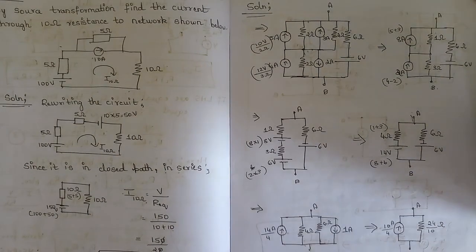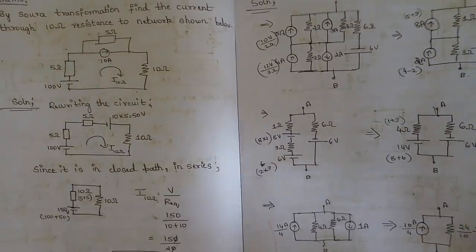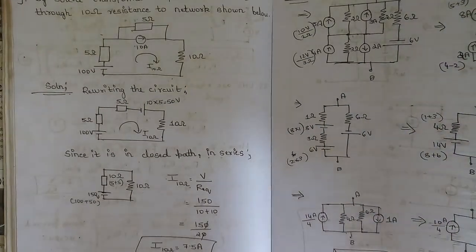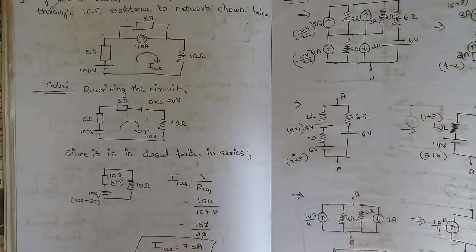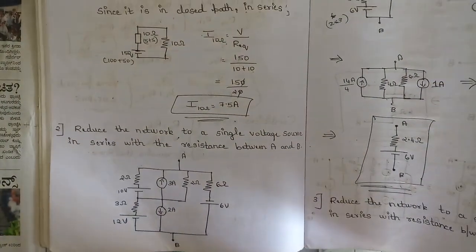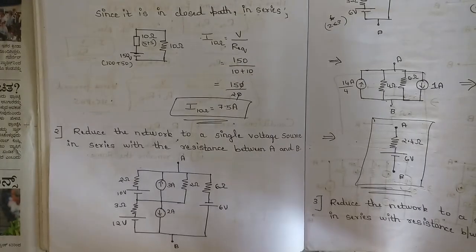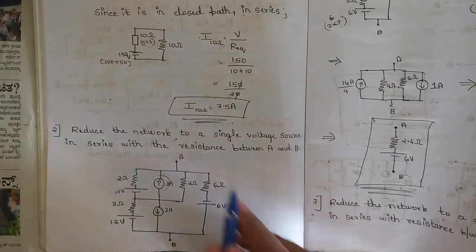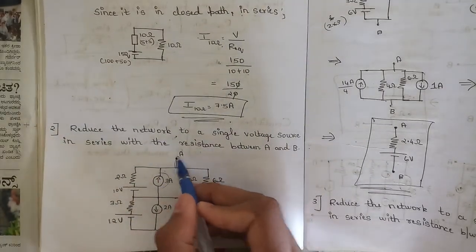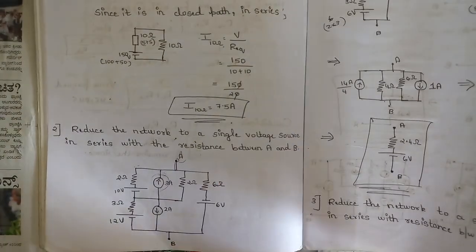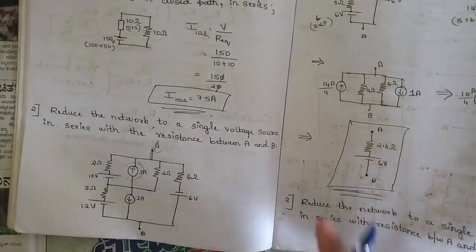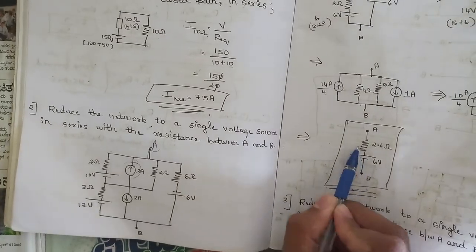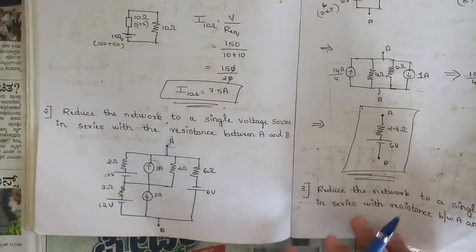The first question from module one is fixed and is related to source transformation. They would be asking about complex circuits involving source transformation. What you need to do is reduce the terminals between A and B such that you are left with only one voltage source in series between terminals A and B.